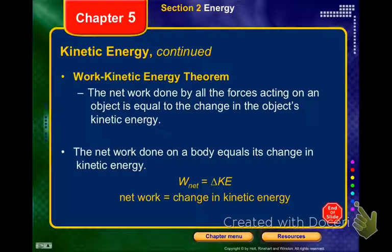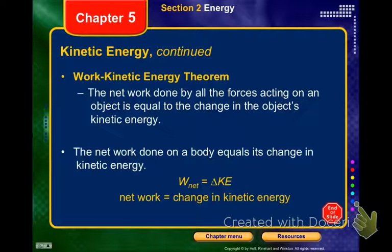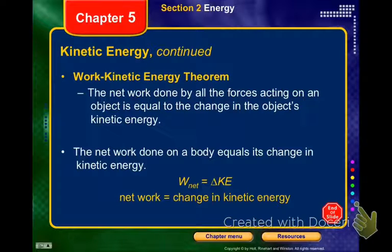Looking back at the PowerPoint, the work-kinetic energy theorem. The equation that goes with this theorem is at the bottom. Your net work by all forces — remember net, you have to include every force you've got — is equal to the change in the object's kinetic energy. That delta sign means a change in kinetic energy. You could have kinetic energy of two different objects, or an initial and final kinetic energy of a singular object, and compare those.